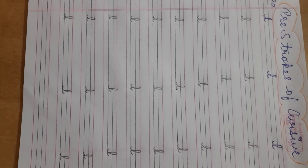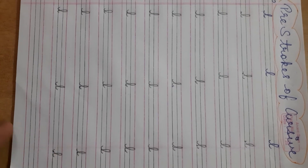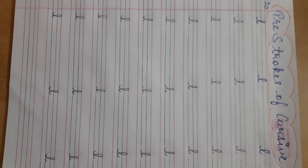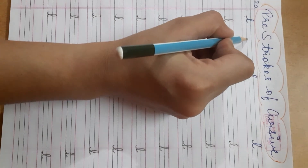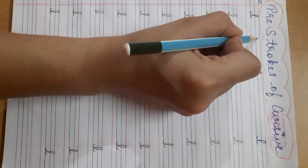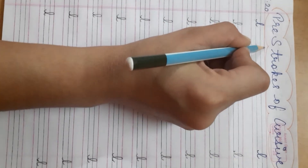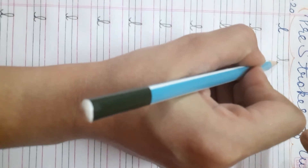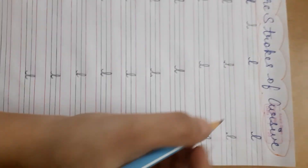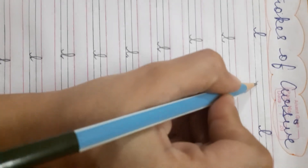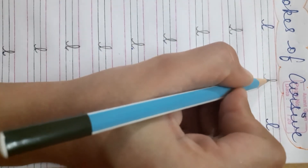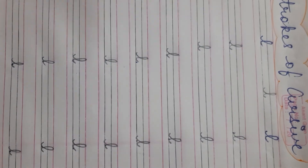Now you have to revise this. Three strokes of cursive, letter L. And how to write? Put your pencil on the third line, make a tail, go up, touch the first line. Again come out with tail. Put your pencil on the third line, go up, again come out with tail. Very good. Letter L. Now you have to revise this.